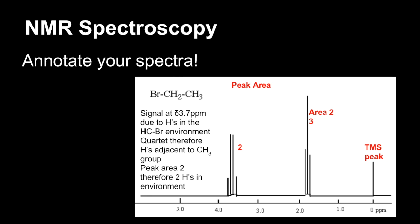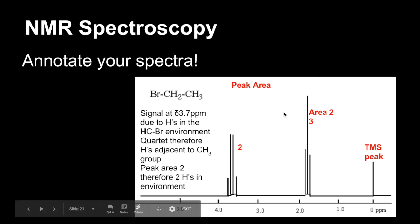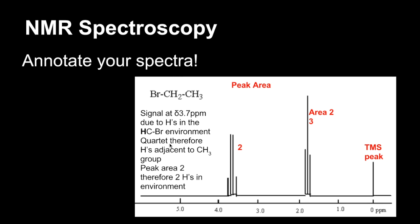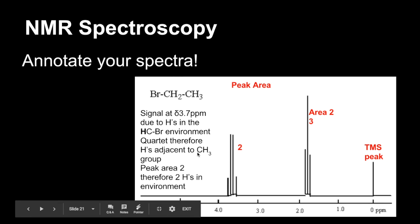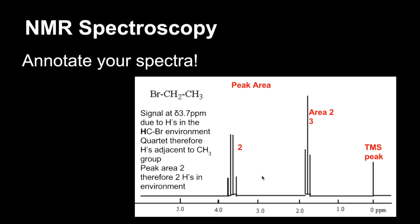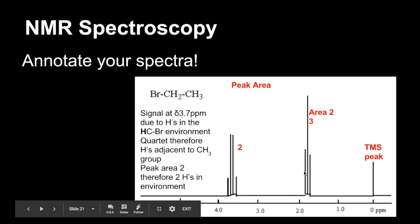NMR spectroscopy now, again, annotate your spectra. So we'll focus on this signal here at 3.7. So the signal at delta 3.7 ppm due to hydrogens in this environment. We're getting that from the datasheet. It's a quartet, so we're using that appropriate terminology. Therefore, the H's causing the signal are adjacent to a CH3 group. So there's that N plus 1 rule. The peak area of 2 means there are 2 H's in the environment. And you move on and say something similar about this peak. And just remember that the peak at delta zero is the TMS peak, the reference peak.